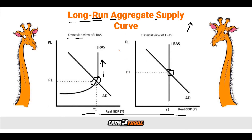As we can see with our graphs, the LRAS curve captures the relation between price level, aggregate demand, and the production flow over a given period of time. In the classic view, even as price rises, the LRAS remains vertical. Under the Keynesian view, the LRAS curve itself is elastic up to a certain point before it becomes vertical and insensitive to price.